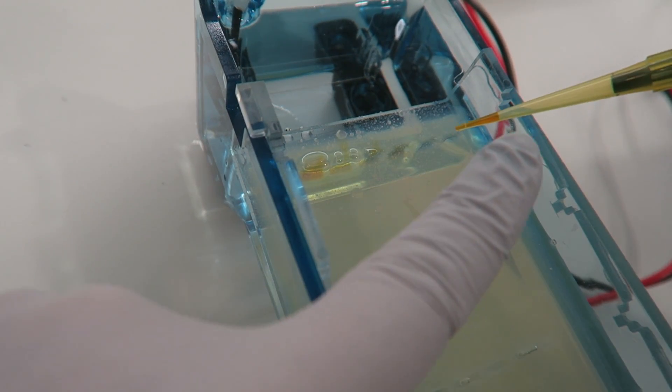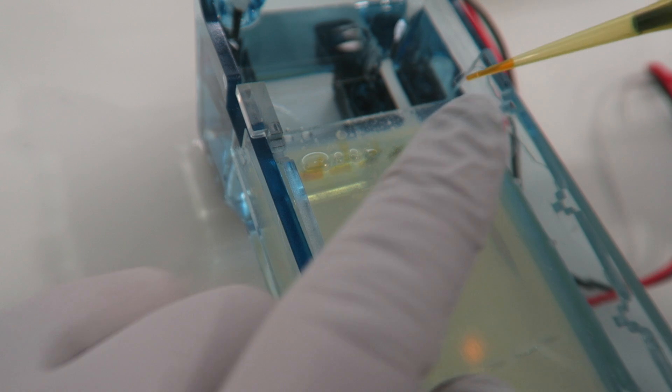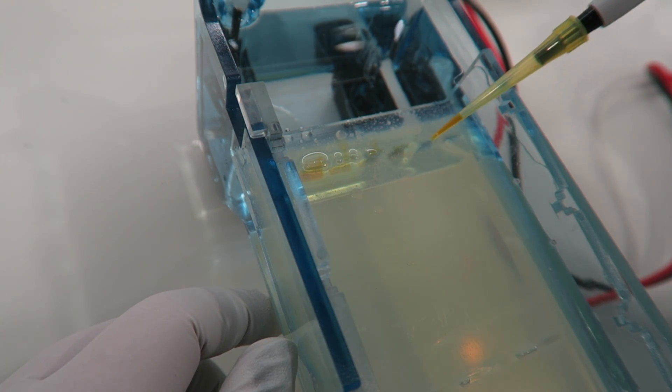The gel can then be visualized under UV, radioactive hybridization, or with a fluorescent probe to see where the bands are. This can then have a photo taken and be used for diagnosis.